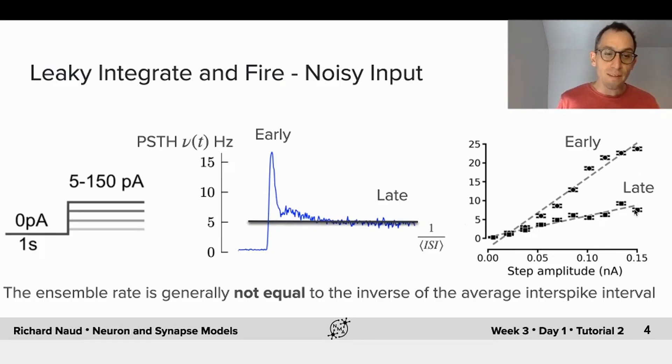So all this goes to say that the ensemble rate is generally not equal to the inverse of the average inter-spike interval. So these are two fairly independent features of the output of those neurons.